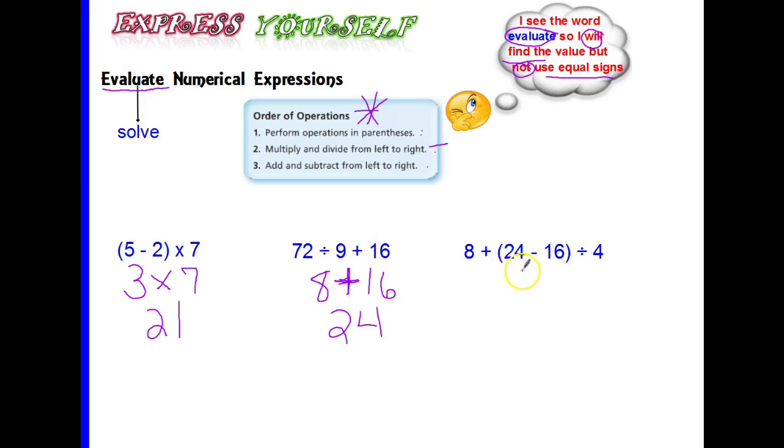And finally 8 plus 24 minus 16 divided by 4. And now we see that we have additional digits. We have 4 digits here and we have 3 operation signs instead of 2 like the other problems show. We have addition, subtraction, and division in this problem. So we know we're going to have to do this part first. 24 minus 16 and that is going to give us 8.